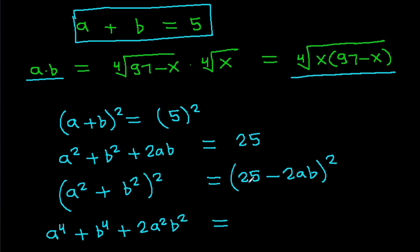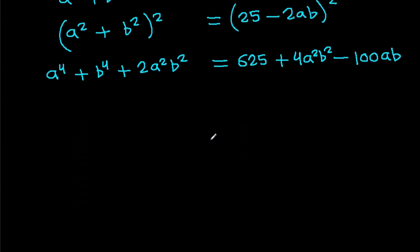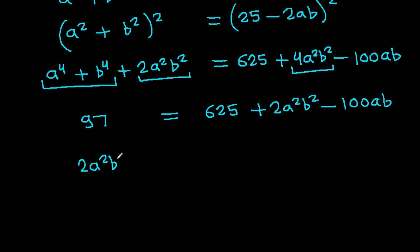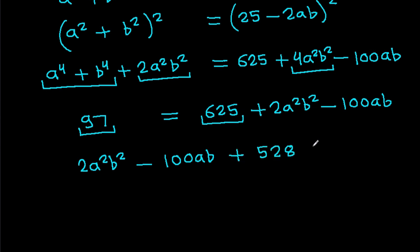Expanding the right side: (25 minus 2ab) squared equals 625 plus 4a squared b squared minus 100ab. We have a to the power 4 plus b to the power 4 equals 97, so 97 plus 2a squared b squared equals 625 plus 4a squared b squared minus 100ab. Rearranging gives 2a squared b squared minus 100ab plus (625 minus 97) equals 0, which is 2a squared b squared minus 100ab plus 528 equals 0.